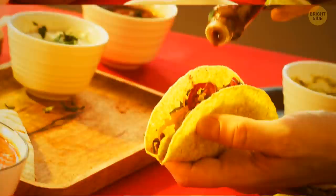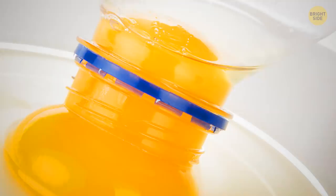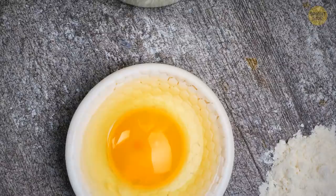You can use a water bottle to separate egg yolks. Hold the bottle over the yolk and squeeze it to suck the yolk up. Drop it into a separate bowl, and you're good to go.